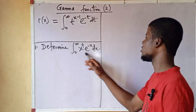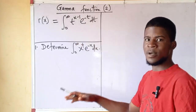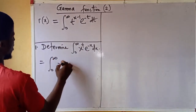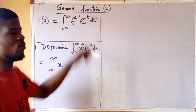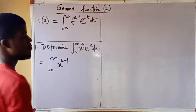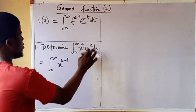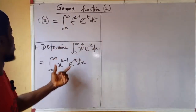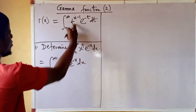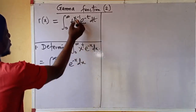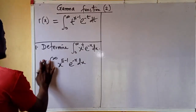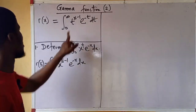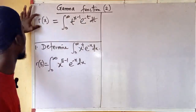What I would do is write this integral to be in the standard format. The integral from 0 to infinity of x to the power of 5 minus 1 — because 5 minus 1 gives me 4 — times e to the power of minus x, dx. So if this is gamma of x, and this integral is exactly in this format, then comparing the two integrals, what we have here is equivalent to gamma of 5, because 5 is standing in place of x in the definition.